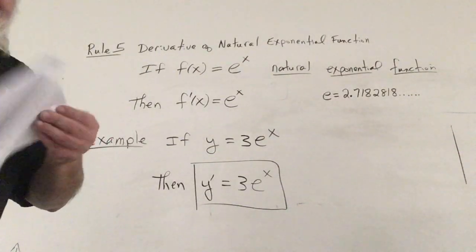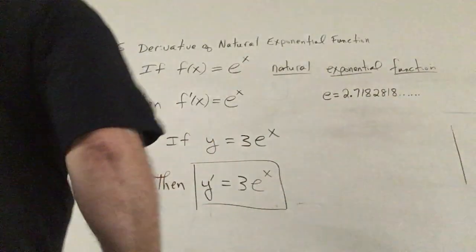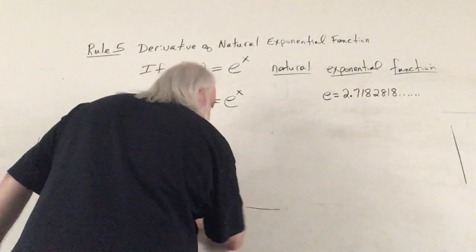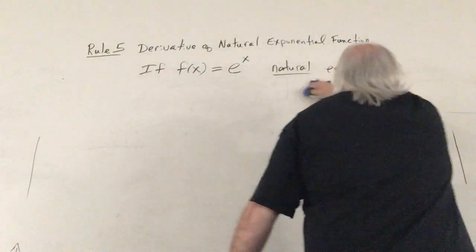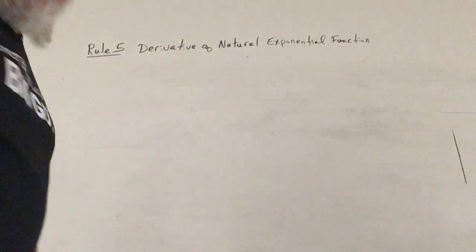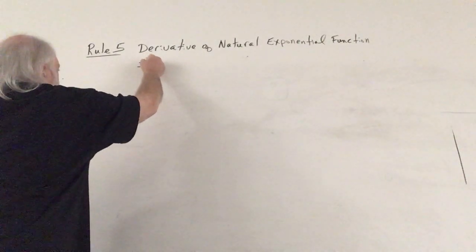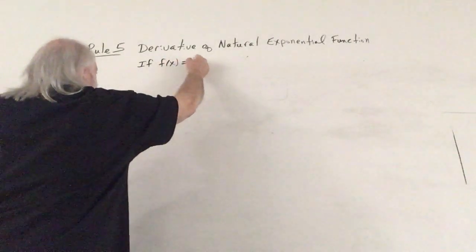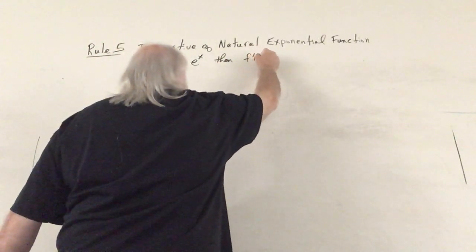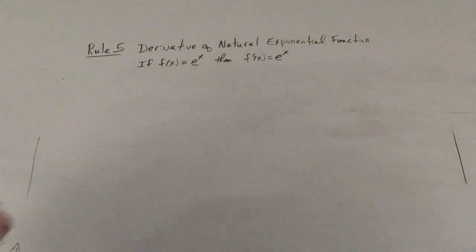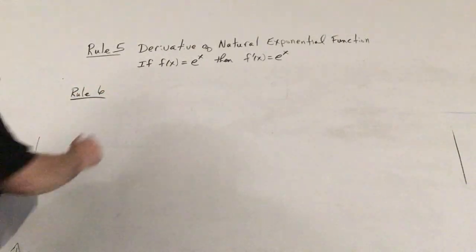On the next page of your packet, page 18, we're going to discuss the chain rule for the exponential function. This is the first time I've used that phrase — chain rule — so we're introducing it here, and we'll be referring to the chain rule with some frequency going forward. I'm going to leave rule five up here on the board: if f of x equals e to the x, then f prime of x equals e to the x. Rule six concerns the chain rule for the natural exponential function.